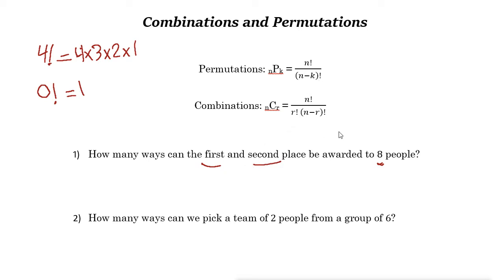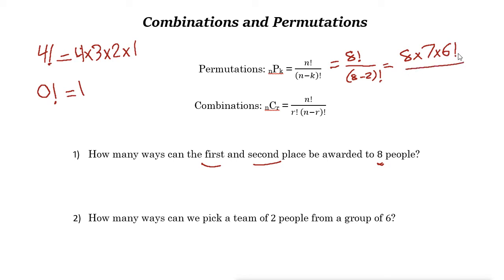So k is 2 and n is 8. We get 8 factorial over 8 minus 2 factorial, which is 8 factorial over 6 factorial. Since 8 factorial is 8 times 7 times 6 factorial, the 6 factorials cancel out, leaving 8 times 7, which equals 56. So there are 56 different ways to award first and second place to 8 people.